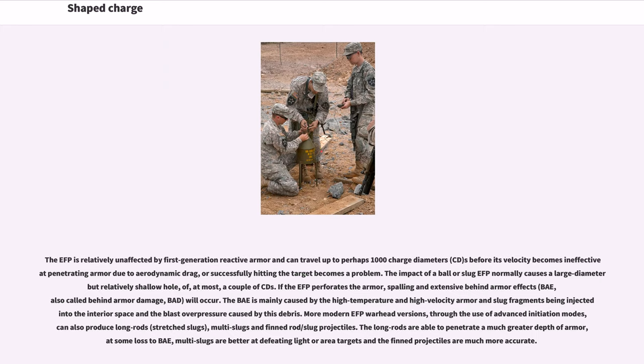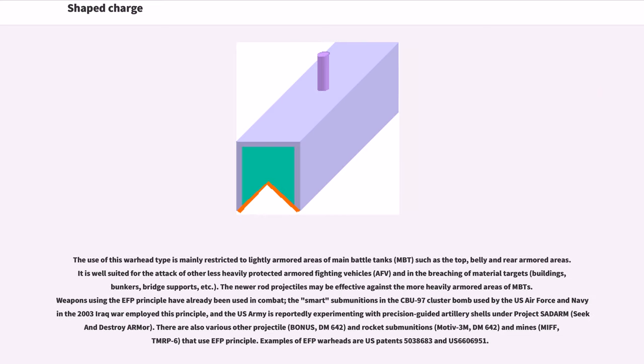More modern EFP warhead versions, through the use of advanced initiation modes, can also produce long rods, stretched slugs, multi-slugs and finned rod-slug projectiles. The long rods are able to penetrate a much greater depth of armor, at some loss to BAE. Multi-slugs are better at defeating light or area targets and the finned projectiles are much more accurate. The use of this warhead type is mainly restricted to lightly armored areas of main battle tanks, MBT, such as the top, belly and rear armored areas. It is well suited for the attack of other less heavily protected armored fighting vehicles, AFV, and in the breaching of material targets: buildings, bunkers, bridge supports, etc. The new ERAD projectiles may be effective against the more heavily armored areas of MBTs. Weapons using the EFP principle have already been used in combat. The smart submunitions in the CBU-97 cluster bomb used by the U.S. Air Force and Navy in the 2003 Iraq War employed this principle, and the U.S. Army is reportedly experimenting with precision-guided artillery shells under Project SADARM, Seek and Destroy Armor.